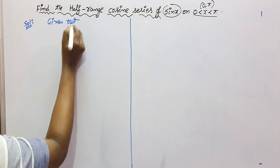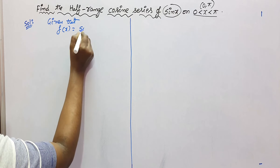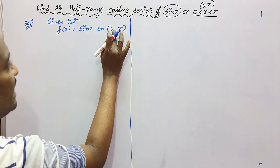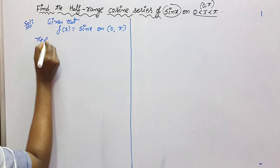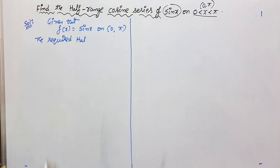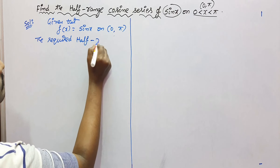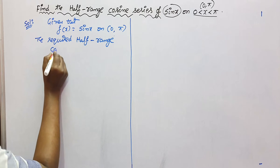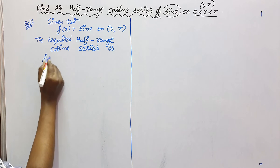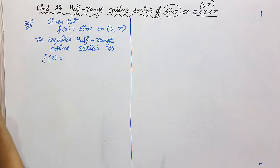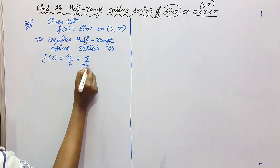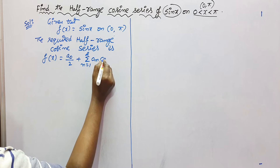Let us represent the given function as f(x) = sin(x) on the interval (0, π), whose interval length is π. The required half-range cosine series is f(x) = a0/2 + summation from n=1 to infinity of an·cos(nx). The cosine series has only cosine terms, which are a0 and an.